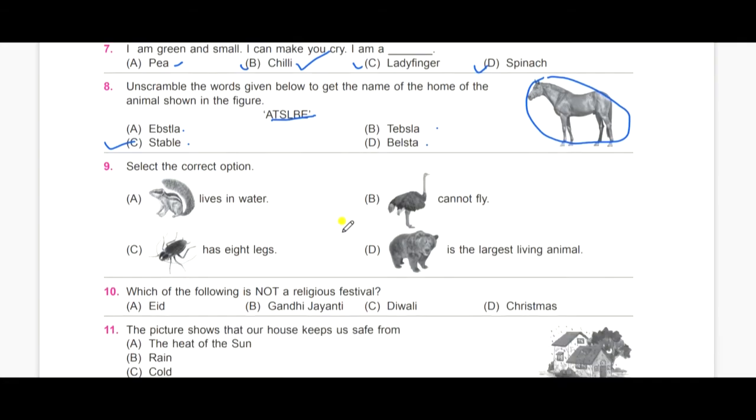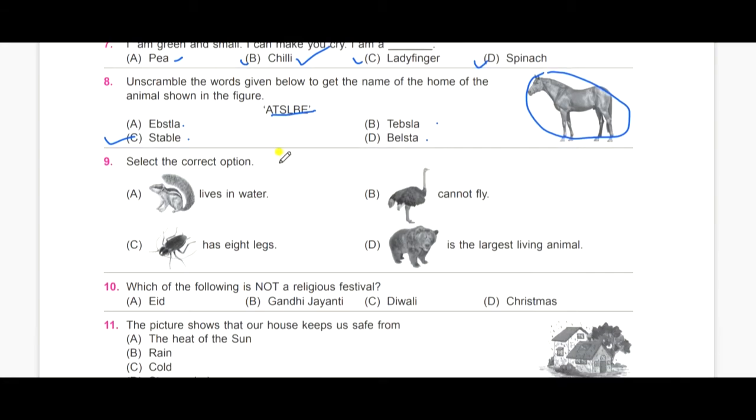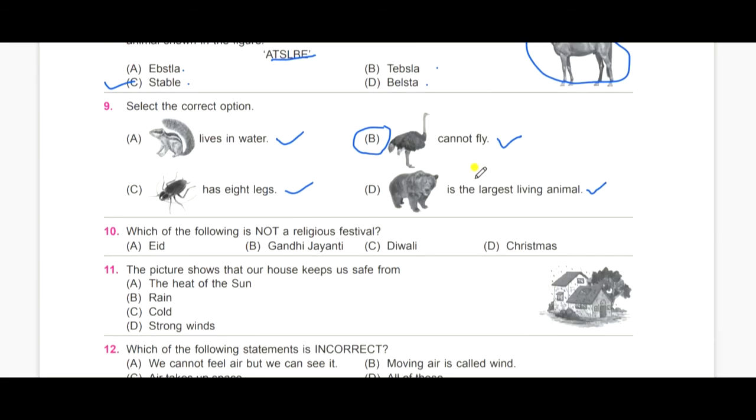Select the correct option. A, squirrel lives in water. B, ostrich cannot fly. C, cockroach has eight legs. And D, bear is the largest living animal. Think for your answer. Ostrich is a flightless bird because its body is heavy and it cannot fly. So, B is the correct answer.